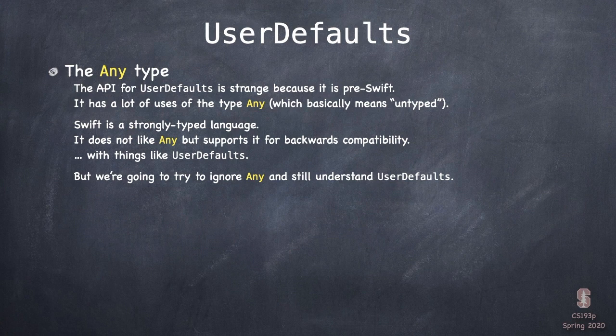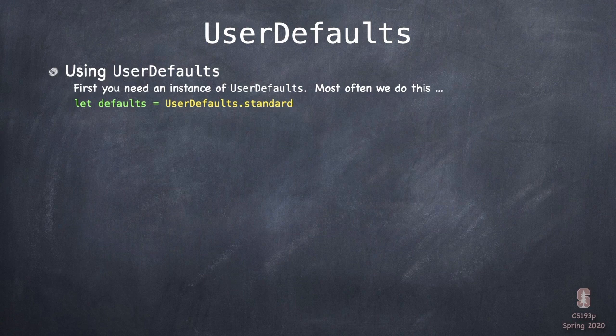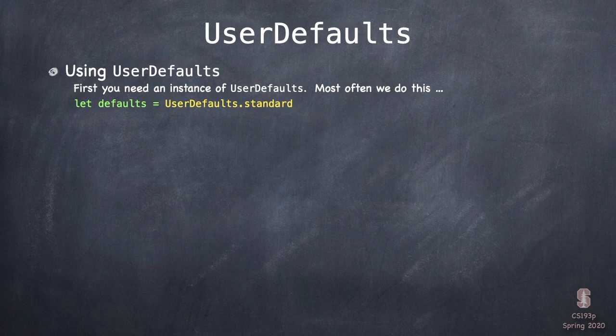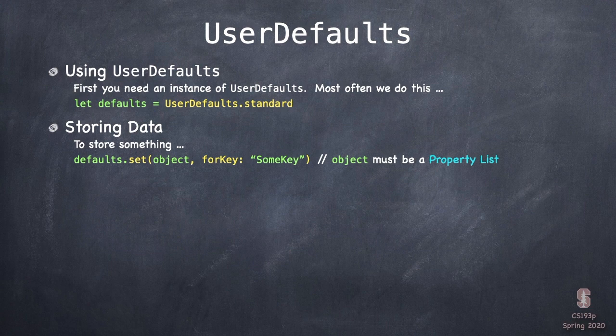The first thing you need to use UserDefaults is an instance of UserDefaults — all the methods you'll use are instance methods. We do that usually with the static var called `standard` on UserDefaults. You say `UserDefaults.standard` and you get a shared instance you can use in your entire app. You can make other instances, but this is 99% of the time how we do it.